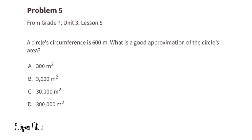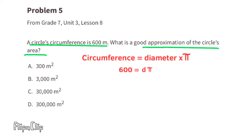Problem number 5 from 7th grade, Unit 3, Lesson 8. A circle's circumference is 600 meters. What is a good approximation of the circle's area? Remember, the circumference is the diameter times π. This means that the diameter times π is going to equal 600 meters. We can divide both sides by π. d times π divided by π equals d, and 600 divided by π is approximately 191.08. That means that the radius is half of that, about 95.54 meters.